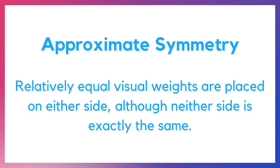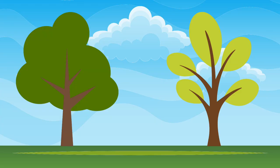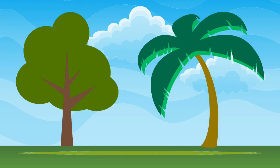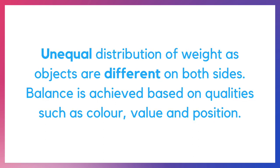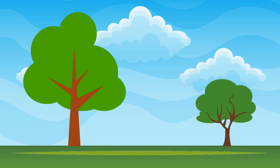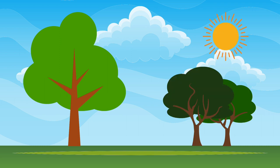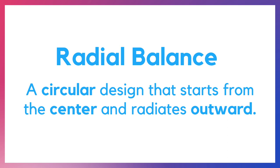Approximate symmetry is another type of symmetrical balance where relatively equal visual weights are placed on either side, although neither side is exactly the same. Next, we have asymmetrical balance, also known as informal balance. This occurs when there is an unequal distribution of weights, as objects are different on both sides.